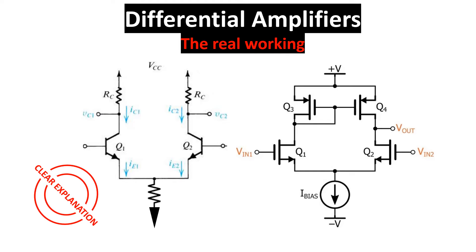This video talks about differential amplifiers explained in a clear way. We see a qualitative explanation of how this circuit can amplify differential inputs while rejecting common ones, and also the quantitative exposition to get the main relation of this configuration. We use MOSFETs or BJTs indifferently because the basic working of the configuration is the same.